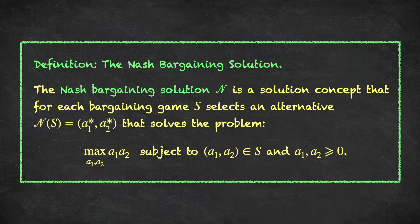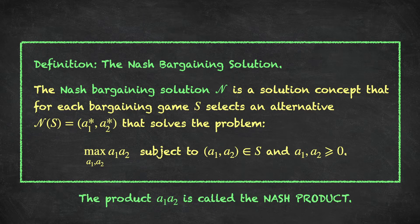Given an alternative A that belongs to a bargaining game S, the product A1 times A2 is sometimes called the Nash product, and so the Nash bargaining solution chooses the alternative from the bargaining set S that is better than or at least as good as the disagreement point for both players and that maximizes the Nash product.